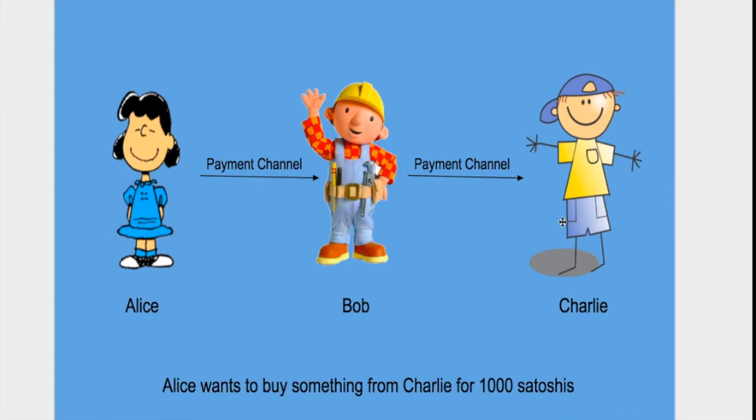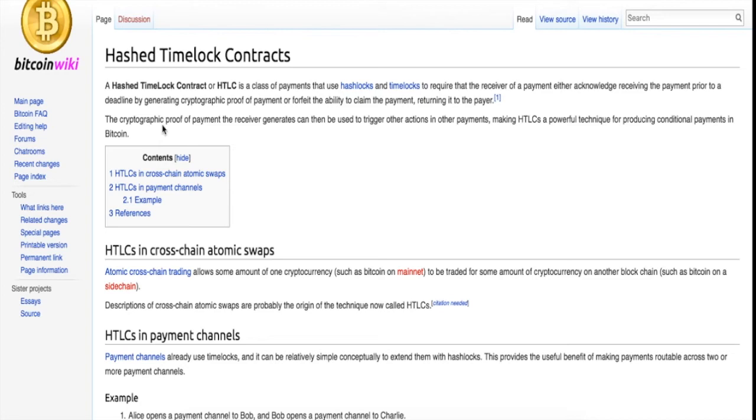A hash time lock contract, or HTLC, is a class of payments that uses hash locks and time locks to require that the receiver of a payment either acknowledge receiving the payment prior to a deadline by generating cryptographic proof of payment, or forfeit the ability to claim the payment, returning it to the payer. The cryptographic proof of payment the receiver generates can then be used to trigger other actions in other payments, making HTLCs a powerful technique for producing conditional payments in Bitcoin.